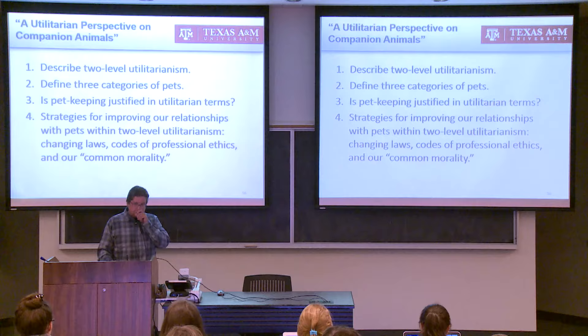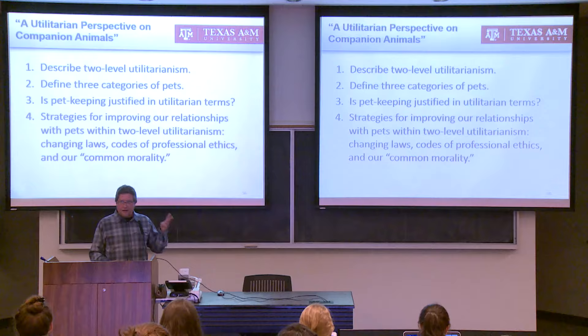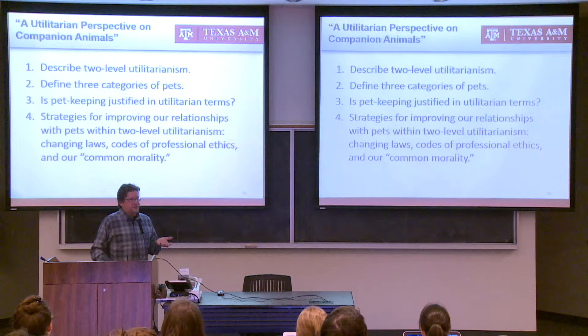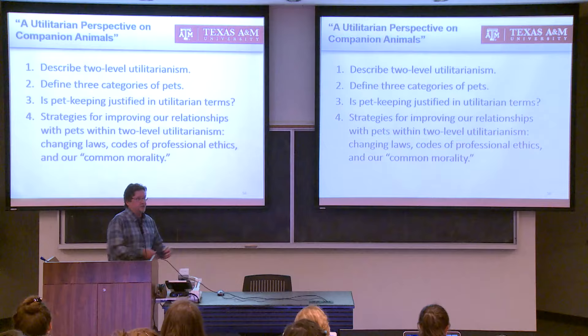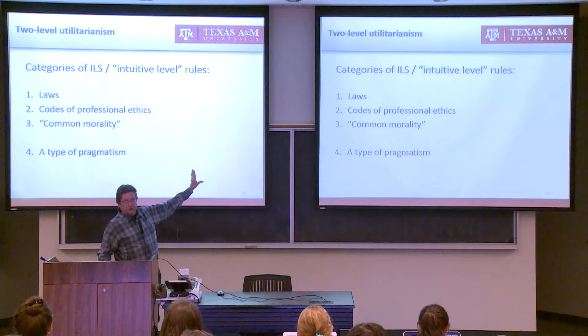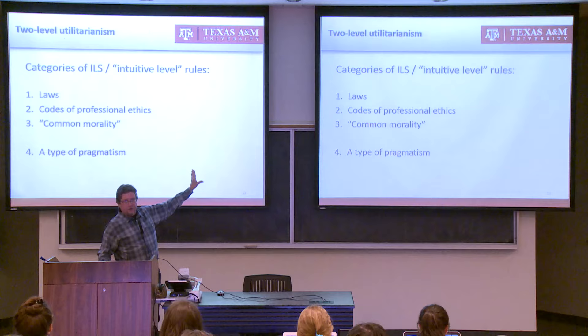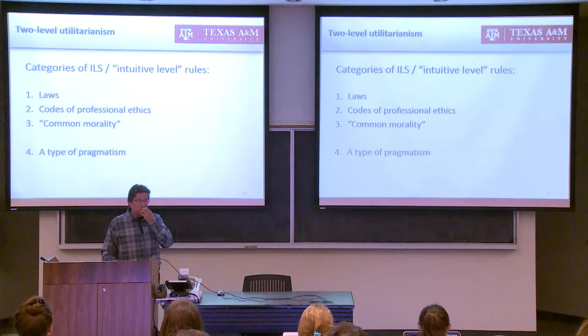Now for strategies for improving our relationships with pets. Within a two-level utilitarian system there are discrete types of ILS rules — laws, professional ethics, and common morality. I want to give at least one example within each category of how a utilitarian doing explicit utilitarian thinking would modify inherited ILS rules to improve our institution of pet keeping. The pragmatist question is: what are the strategies most likely to pay off that we can actually put into practice?